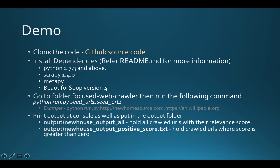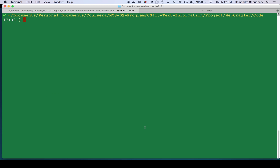For the demo: first clone the code and install the third-party dependencies — you can refer to the readme.md file for more information. Then go to the focused web crawler folder and run the command. I used some relative paths in the script, so it may error out if you don't navigate to that folder first. The output is written to two files: one called 'new_house_output_all' containing all URLs crawled and their corresponding scores, and 'positive_score' containing all URLs with a score greater than zero.